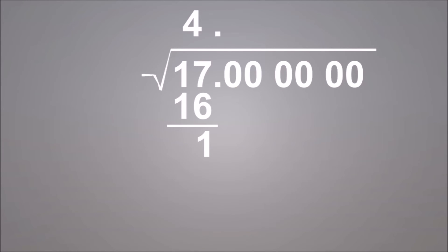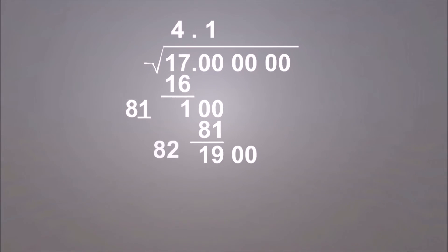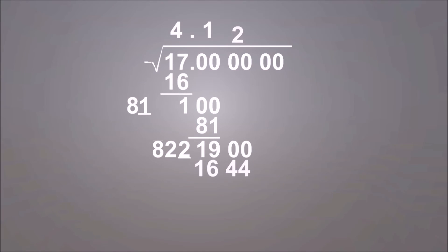Next, take down the next group to the result from the subtraction. Now comes the hard part: taking the answer currently above the radical, double it and put an underline to the right of the number. You want to find the number that, when put in the blank and multiplied by the resultant number, gives the greatest possible value less than the number to the right. In this case, the answer would be 1. Put the answer over the next group on top of the radical and subtract the product from the number to the right. Bring down the next group and repeat until you subtract to zero — signifying all digits that follow will be zeros — or you reach your desired precision on top.